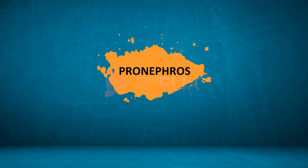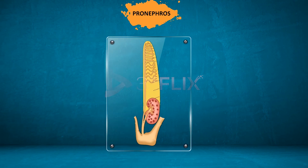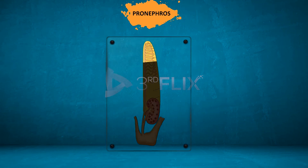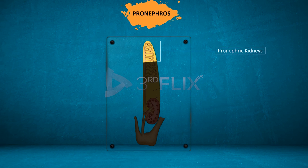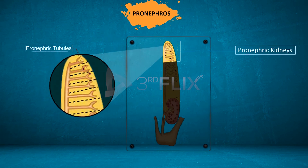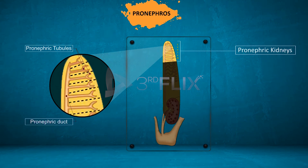Pronephros: it is the first kidney that is formed in the embryos of all vertebrates. The pronephric kidneys develop in the anterior region of the trunk, hence they are also called the head kidneys. Each tubule opens into the coelom by a nephrostome. The glomerulus is naked and present near the tubule. All the tubules of a pronephros open into a common pronephric duct, which opens into the cloaca.